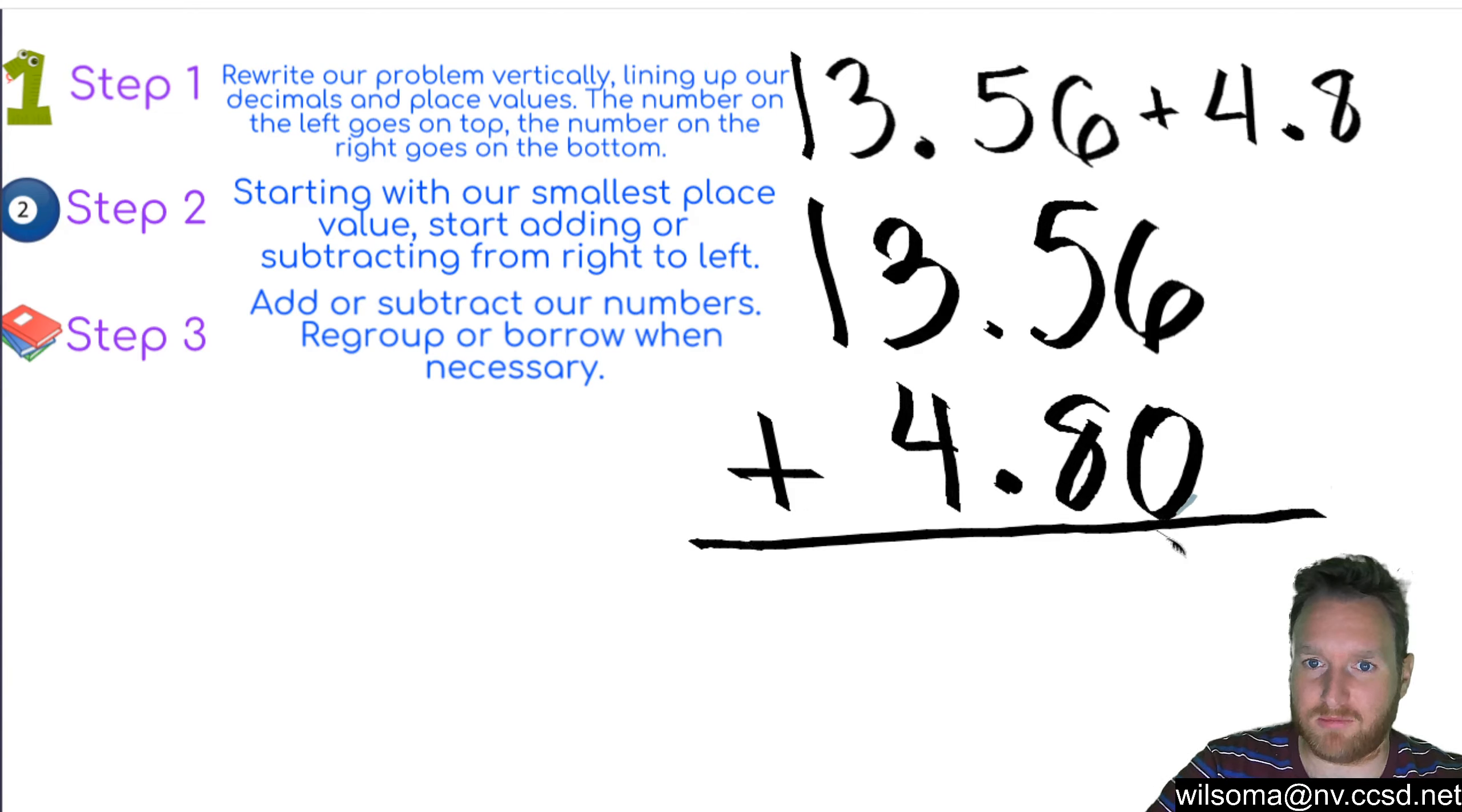It says starting with our smallest place value. So our smallest place value are these values right here. We start from right to left.